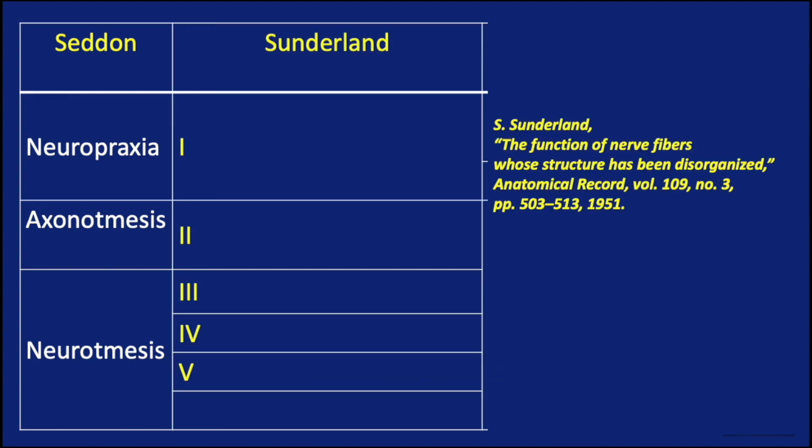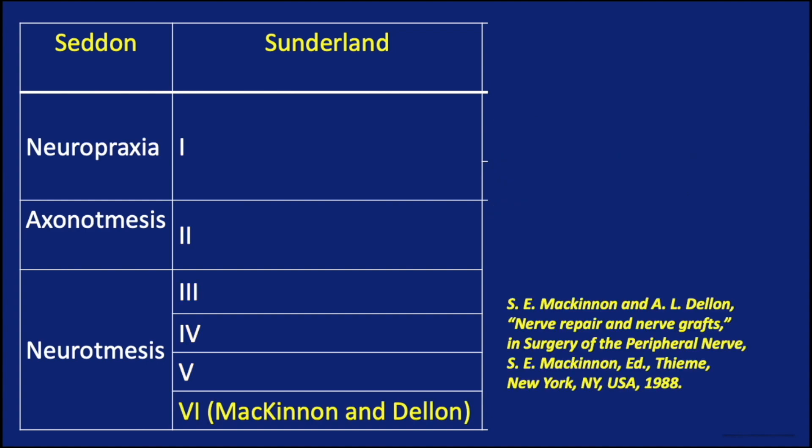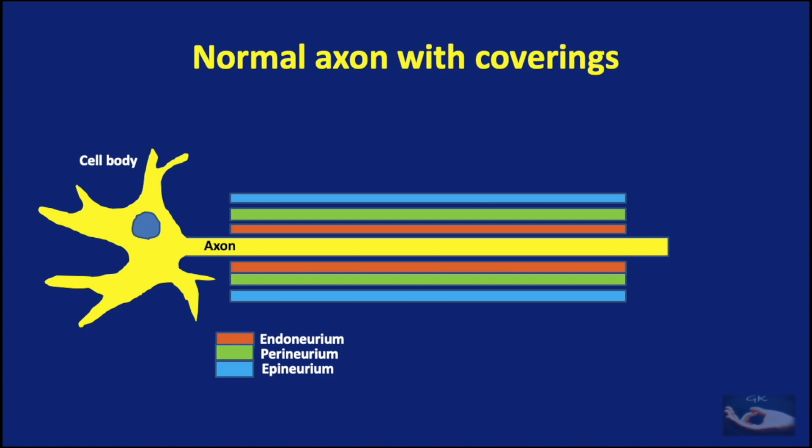Sunderland proposed another classification dividing nerve injury into five types. Later, McKinnon and Dellen added a sixth type. We shall understand the Sunderland classification with a schematic diagram showing the different layers that cover the axon — starting from the endoneurium, the perineurium, and the epineurium.